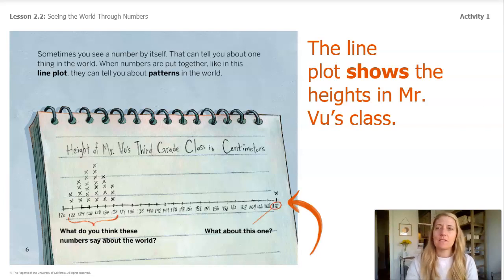This line plot also shows that someone is 170 centimeters tall. This number is much bigger than 128 centimeters, so I picture someone who is much taller than the girl. Visualizing different numbers on the line plot helps us better understand the line plot and the data it represents.